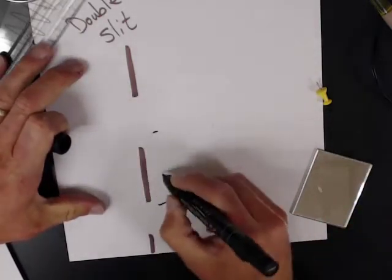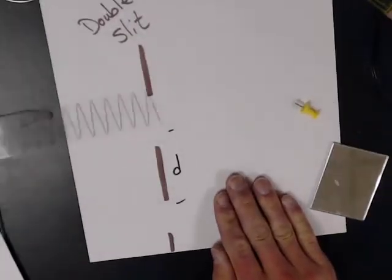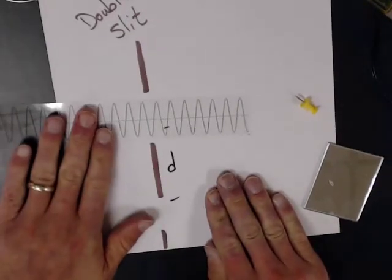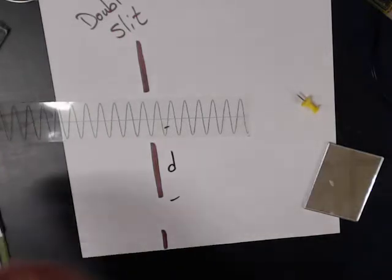D is the distance between those slits, and then let's send some light through. So we need to send light through this one, and we need to send light through the other one.